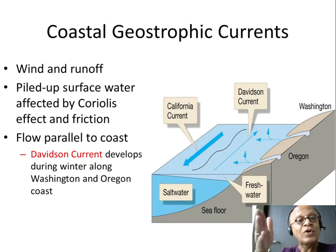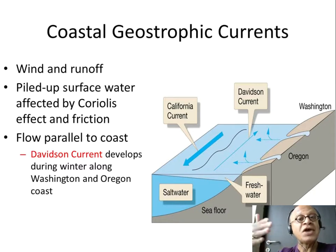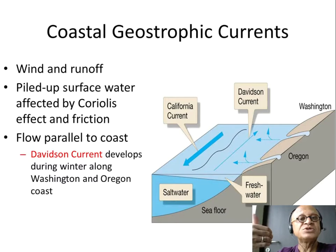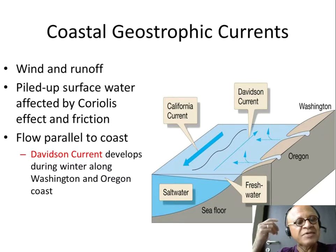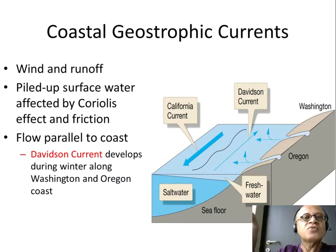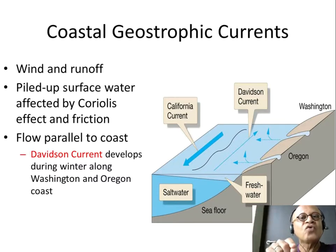You have upwelling when there is Ekman divergence, or the water is being pushed away from the coast. You have Ekman convergence or Ekman downwelling at the coast when water piles up if pushed towards the coast. Anytime you pile up the water, there's going to be geostrophic flow down the hill and then you add Coriolis again.